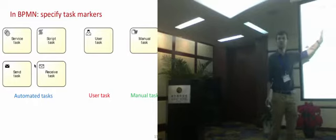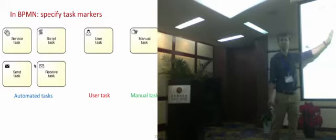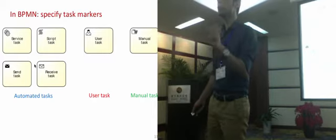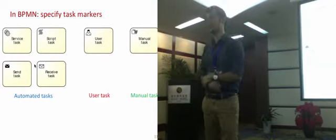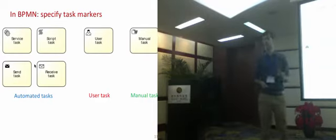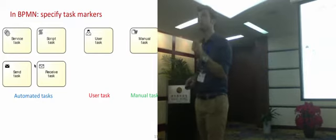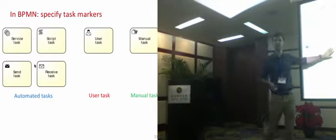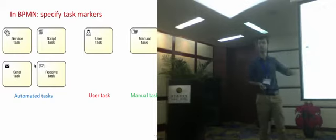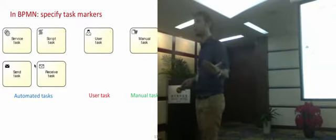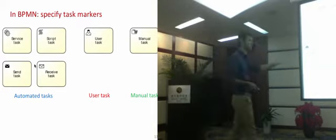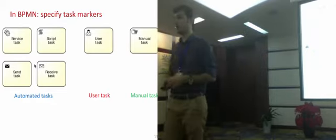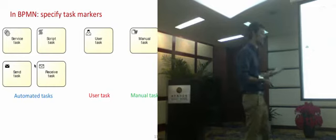For example, a script task could select the best quote from a number of suppliers, or compute an insurance premium. Then there are send tasks and receive tasks, which are subtypes of the service task. Send tasks are used for automatic notifications — like sending an email or posting a message. Receive tasks are for receiving notifications, like a message exchanged with an external application.